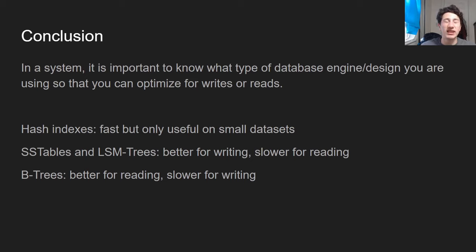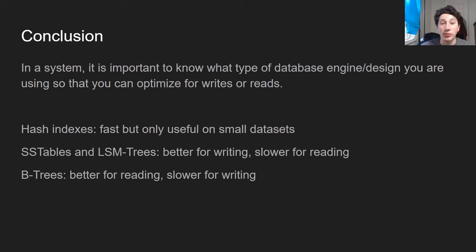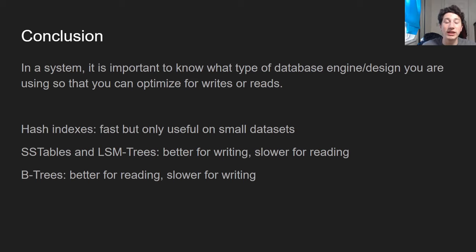In a systems design interview, you need to justify your database choices. Hash indexes are great for small data sets — something like Redis where everything fits in memory. SS tables and LSM trees are great when you need fast writes but reading may be slower. B trees are better for reads but slower for writes. I hope that was a deep enough dive. For more, I recommend reading 'Designing Data-Intensive Applications' by Martin Kleppmann. Hopefully you can now make more informed explanations about database designs that determine read and write throughput.